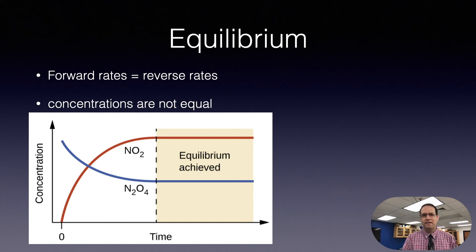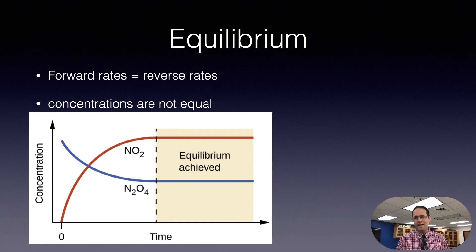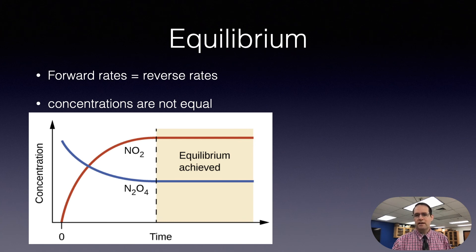As you saw in my demonstration, equilibrium is when the forward rates are equal to the reverse rates, and it's very important to realize that concentrations are not equal. If all the concentrations were equal at equilibrium, the equilibrium constant would equal one and there would be no need for this concept — there would be no chemical reactions, just an equal mixture of things. You can take a look at this graph and pause the video; it's from the OpenStax textbook.